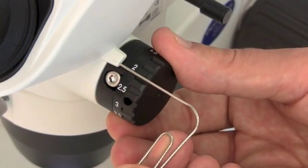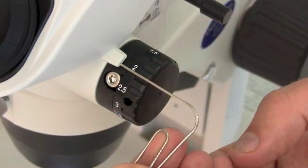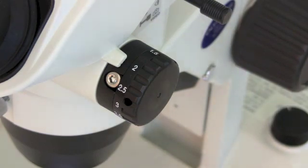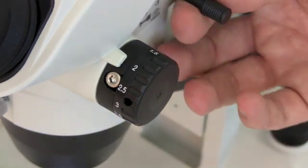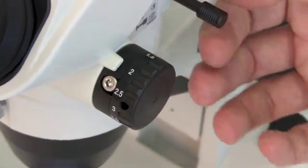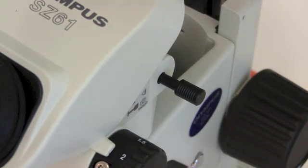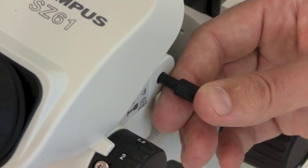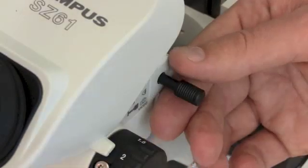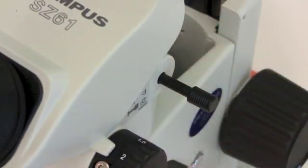The other important feature of the scope that you'll see here is this little do-daddy. It flicks between binocular vision and allowing the camera to see through one of the eyepieces. All the way in, you'll be able to see through both ocular lenses. And all the way out allows the video camera to record and you'll get images on the computer.